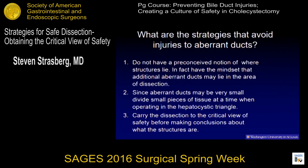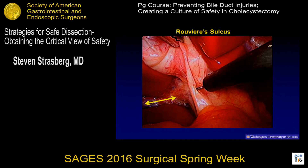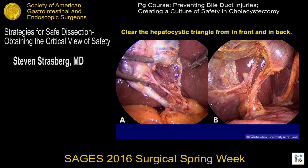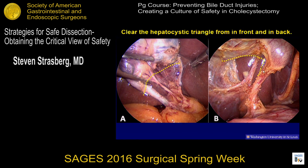Carry the dissection to the critical view of safety before making conclusions about what the ducts are. Rouviere's sulcus — the common bile duct is below Rouviere's sulcus. If you go below this level, the chances are that you could be sorry, because that's where the common bile duct lies. To do the dissection of the hepatocystic triangle for a critical view, it's important to have the ability to dissect from behind as well as in front. Dissection should be at the inferior border of the gallbladder, both from the front and the back — this avoids injury to aberrant ducts in the region where an aberrant duct can come into the cystic duct. It's like dropping a curtain down when you do the dissection.